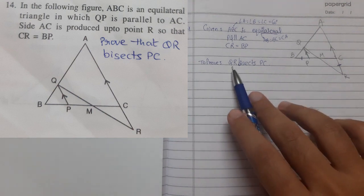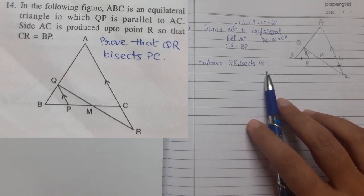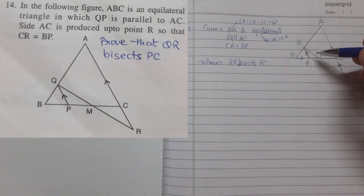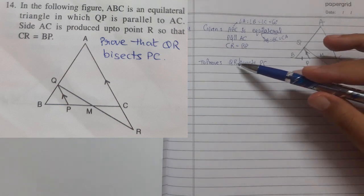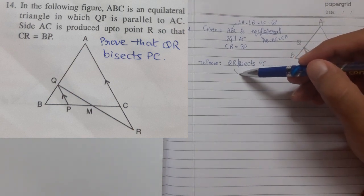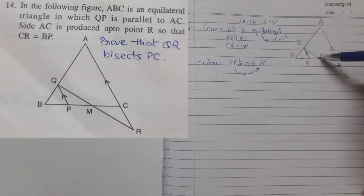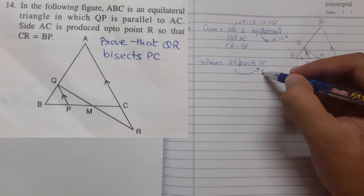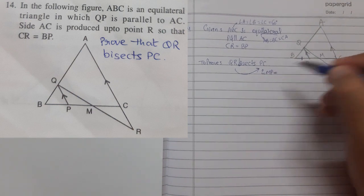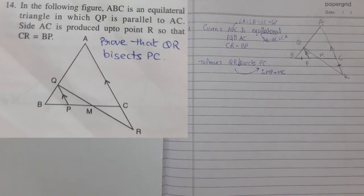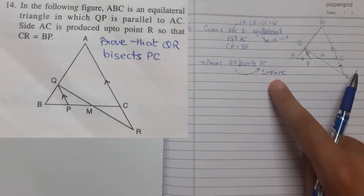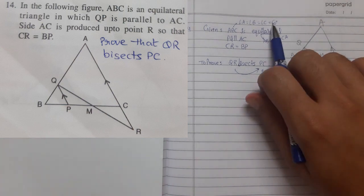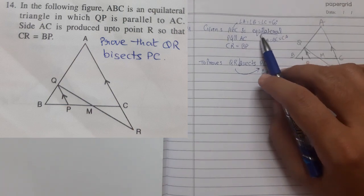We need to prove that QR bisects PC. There are two ways of writing this: QR and PC bisect each other, or here it says QR bisects PC — meaning only QR is bisecting PC. So we need to prove that PM equals MC. We need to interpret the problem into mathematical terms, like 60 degrees for an equilateral triangle.